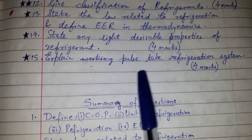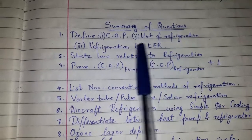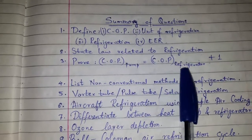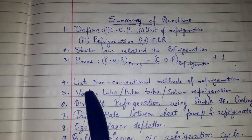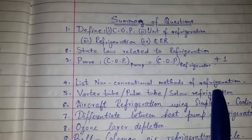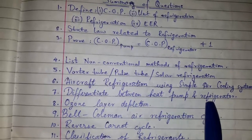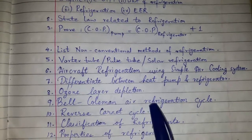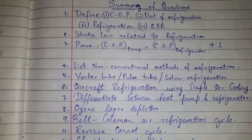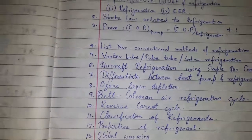To summarize, the key topics for Chapter 1 are: define COP and unit of refrigeration; refrigeration EER; state law related to refrigeration; proof that COP of pump equals COP of refrigerator plus one; non-conventional refrigeration methods — vortex, pulse, and solar; aircraft refrigeration using a simple air cooling system; differentiate between heat pump and refrigerator; ozone layer depletion and global warming; Bell-Coleman air refrigeration cycle; reverse Carnot cycle; classification of refrigerants; and properties of refrigerants.